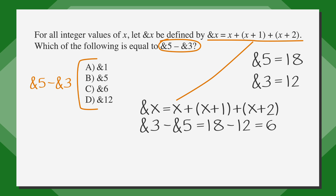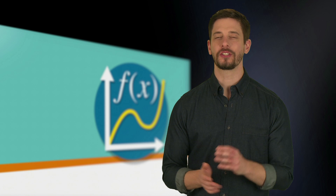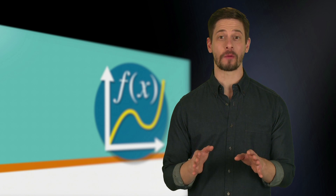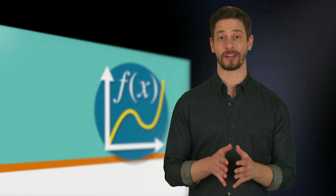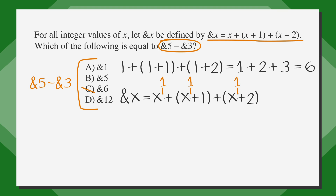Subtracting ampersand-3 from ampersand-5 gives us 18 minus 12, or 6. The question asks which of the following is equal to ampersand-5 minus ampersand-3, so we need to find the answer choice that equals 6. Notice that choice C is ampersand-6 — that's a trick answer. Ampersand-6 is not 6; it's actually 6 plus 7 plus 8, which equals 21. Cross out answer choice C. Looking at answer choice A, ampersand-1 equals 1 plus 2 plus 3, which does equal 6. So we know that A is the right answer.